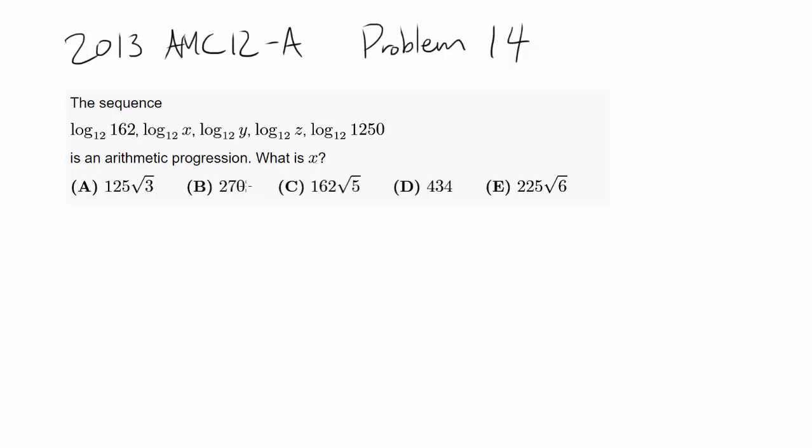This question is from 2013 AMC 12A, problem 14. The sequence log base 12 of 162, log base 12 of X, log base 12 of Y, log base 12 of Z, log base 12 of 1250 is an arithmetic progression. An arithmetic progression is when you're adding the same thing each time.